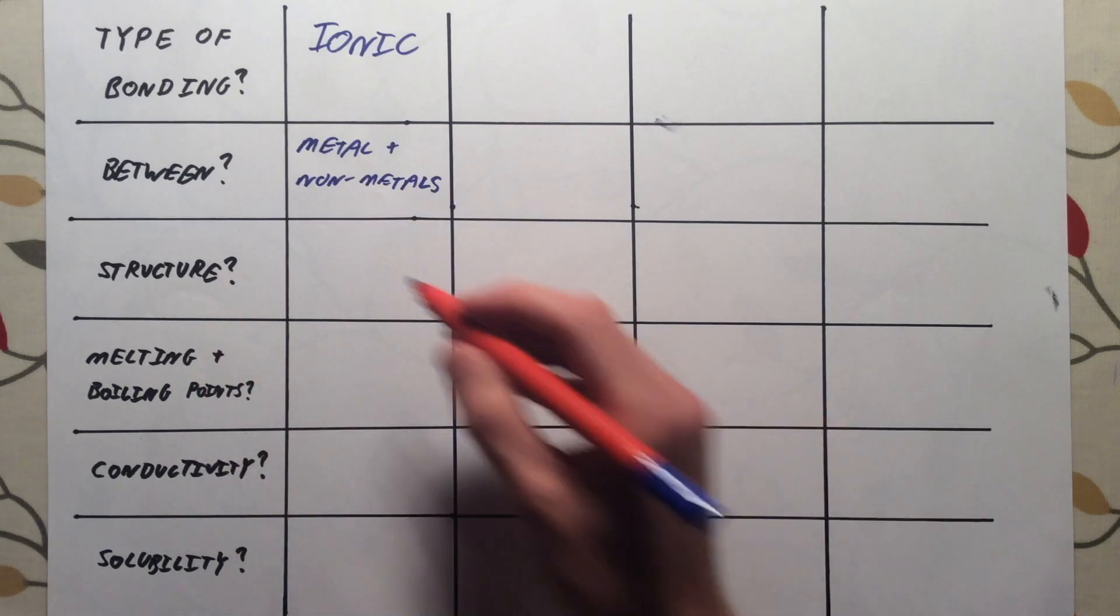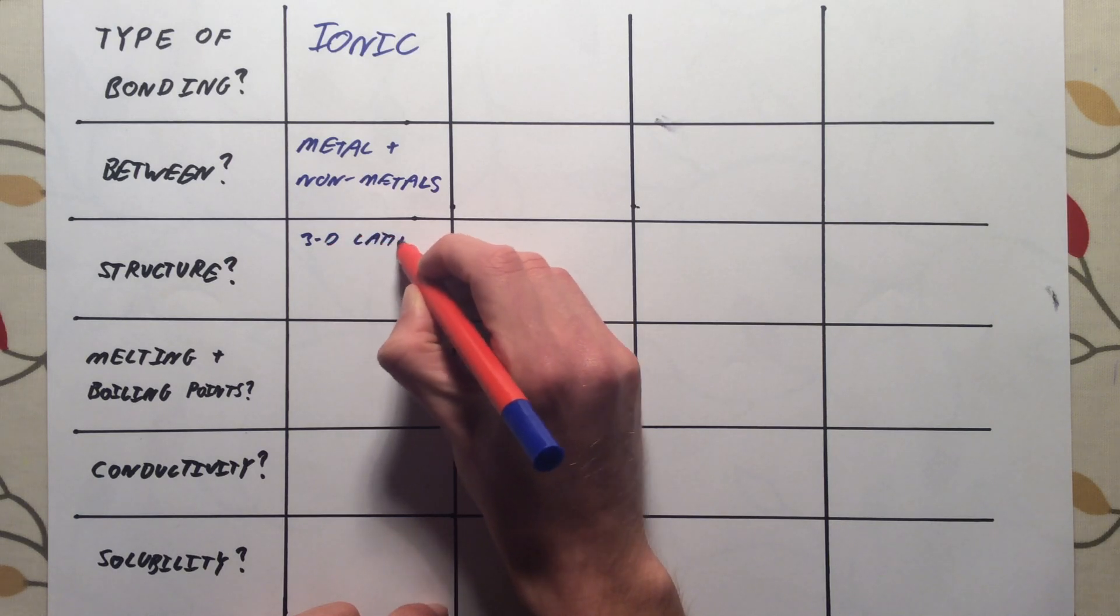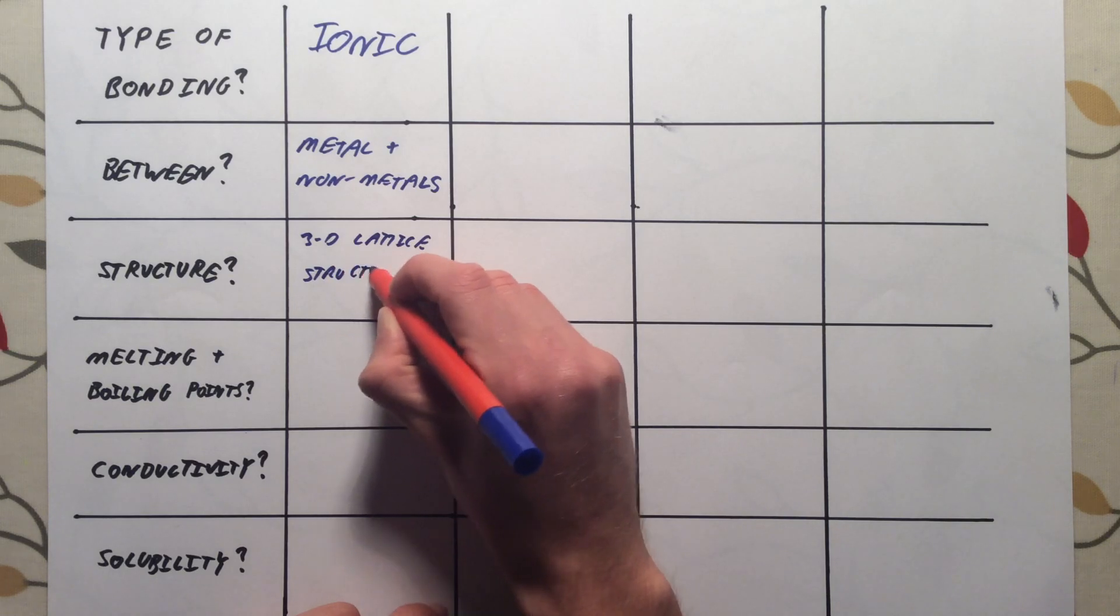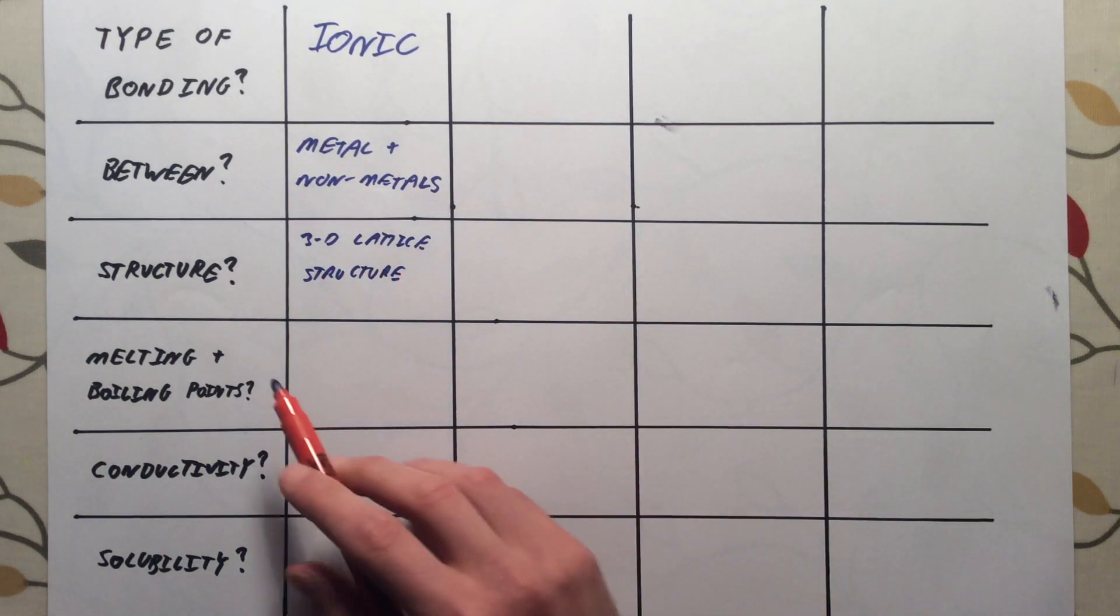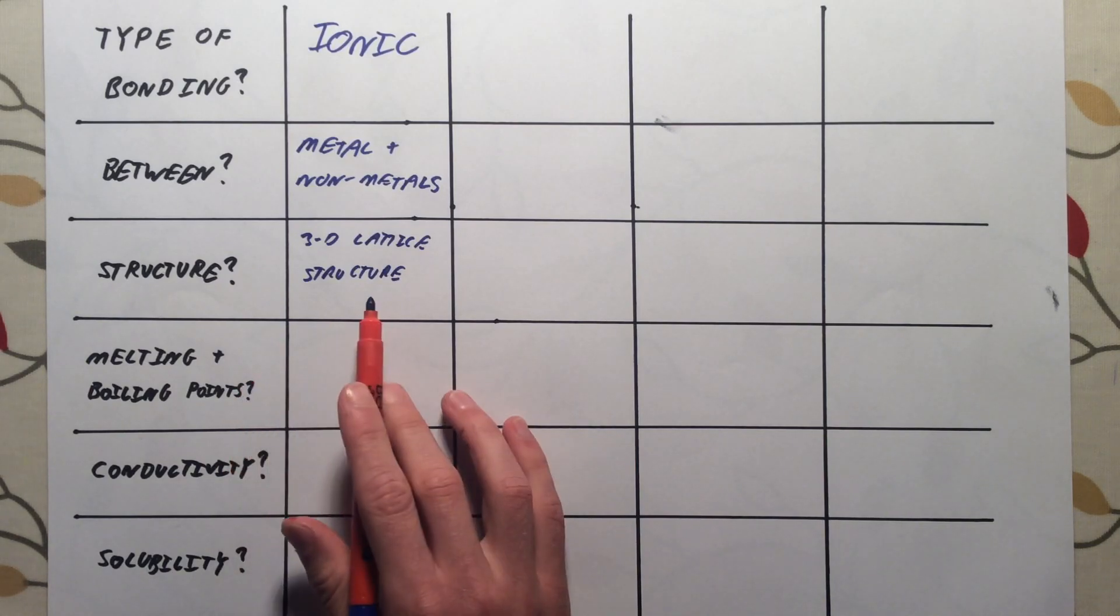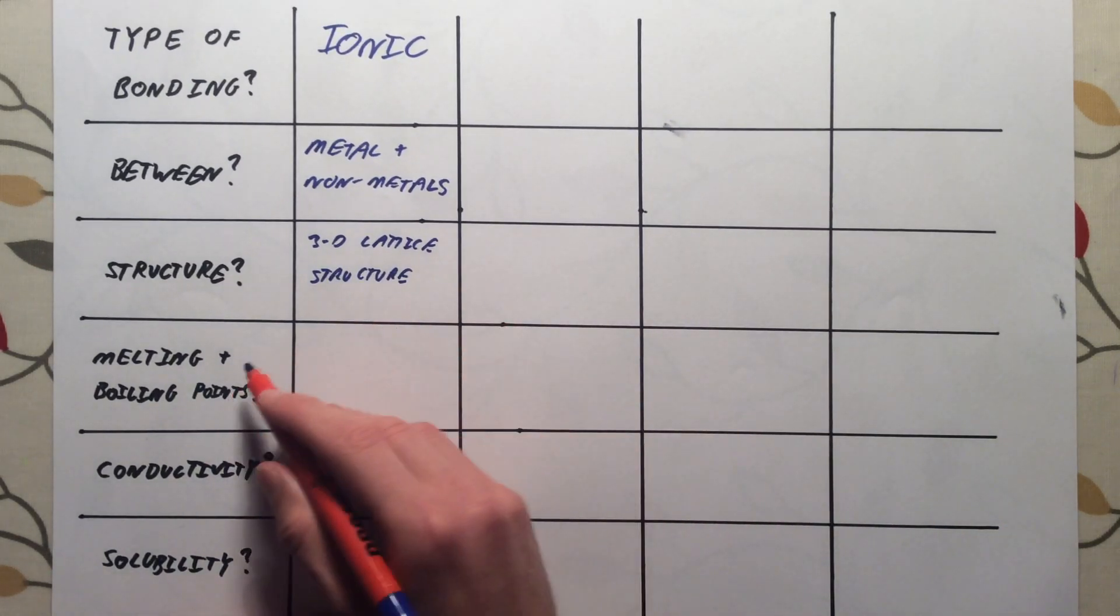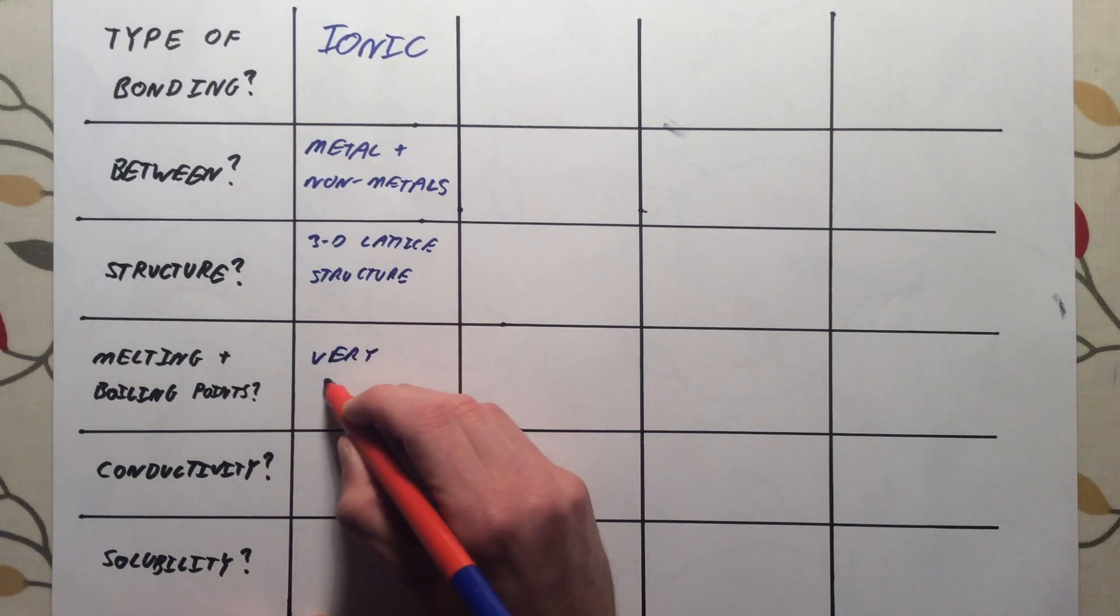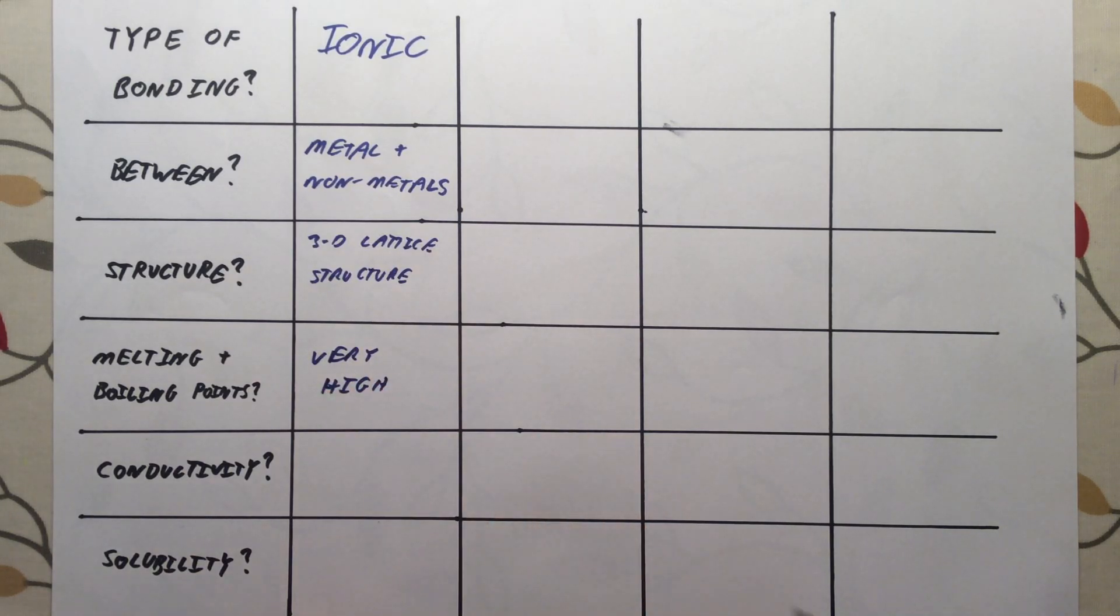The structure of these, they had a 3D lattice structure, with alternating positive and negative ions. Because you have lots of positive and negative ions in the structure, with strong electrostatic forces or ionic bonds between them, the melting and boiling points of ionic compounds is very high. It takes a lot of energy to overcome those strong forces.